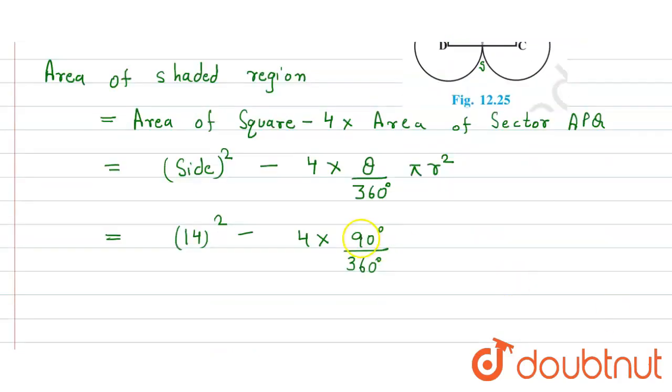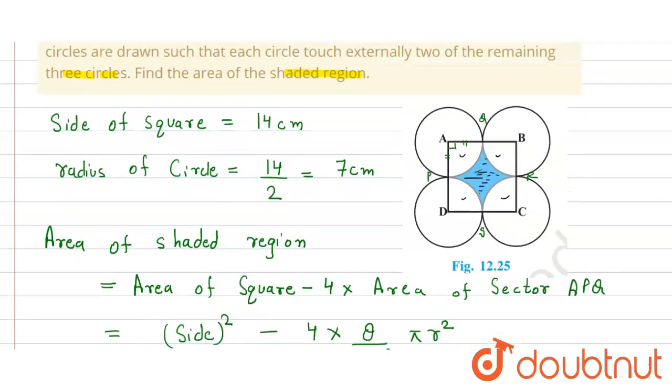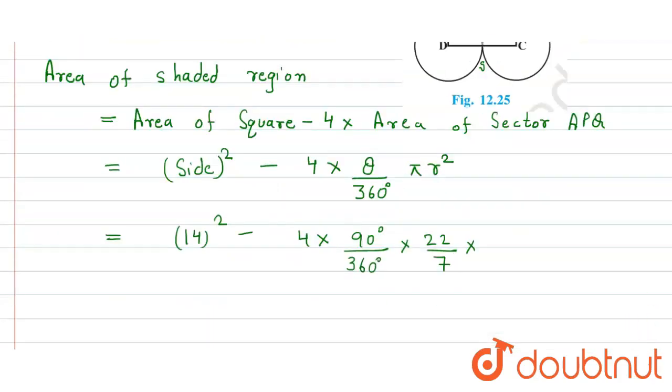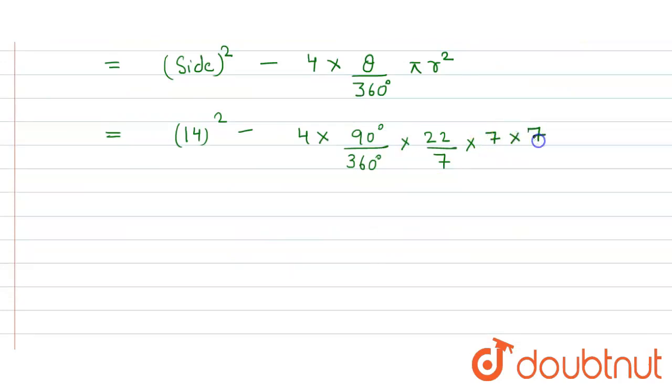So here we get 90 divided by 360 into pi. So we get 22 divided by 7. Here radius is 7 centimeter, so we take 7 into 7.